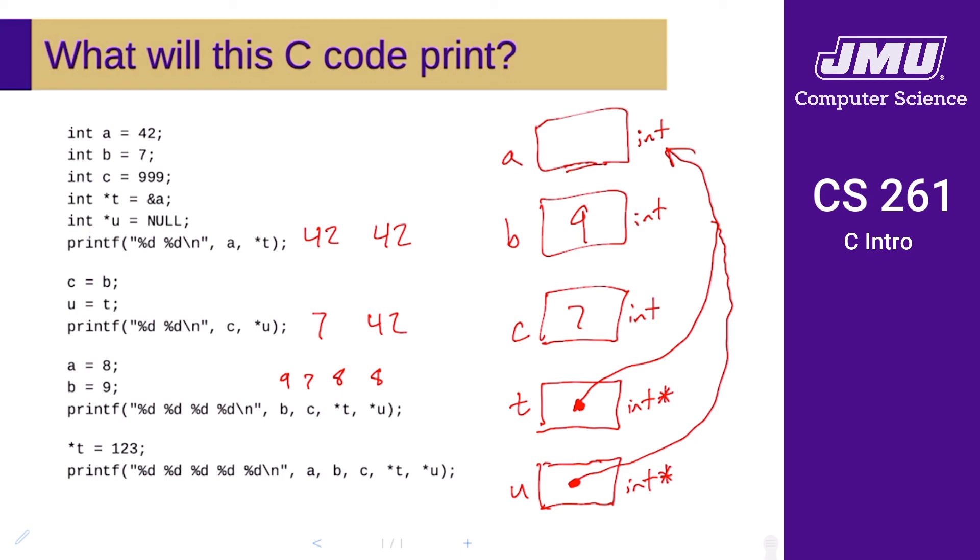That is in fact what happens here, so this changes a to be 123, because a is the thing that t is pointing to. Now when we print out a, we're going to get 123.